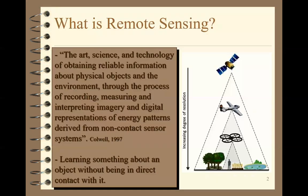So what is remote sensing? Here's an official definition: the art, science, and technology of obtaining reliable information about physical objects and the environment through the process of recording, measuring, and interpreting imagery and digital representations of energy patterns derived from non-contact sensor systems. That sounds pretty daunting, but let's make it simple. Remote sensing is simply learning something about an object without being in direct contact with it.